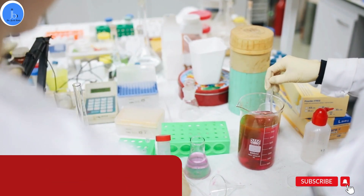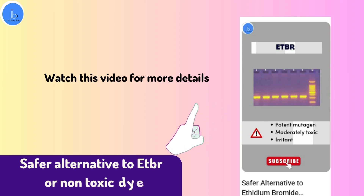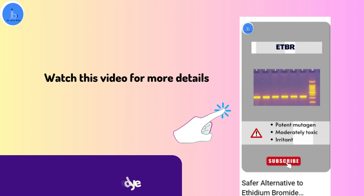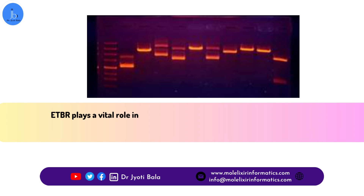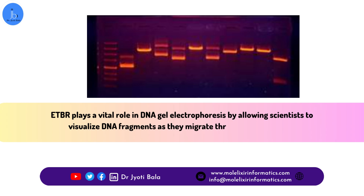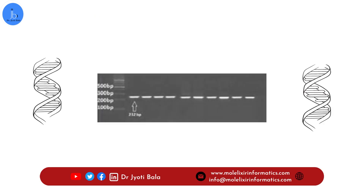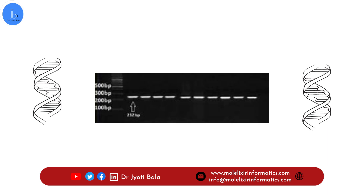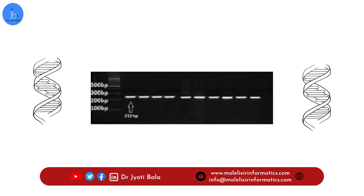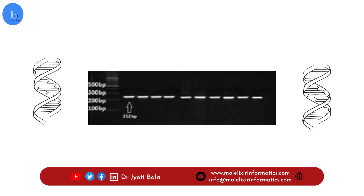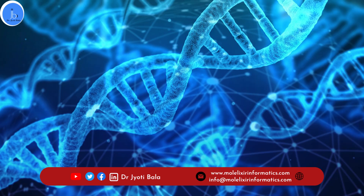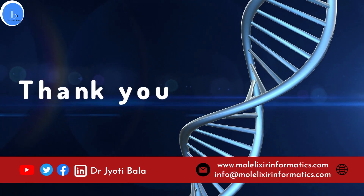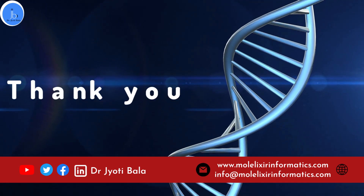In summary, EtBr plays a vital role in DNA electrophoresis by allowing scientists to visualize DNA fragments as they migrate through the gel matrix. Its fluorescence under UV light provides a clear and distinct image, aiding in the analysis and interpretation of DNA fragment size. That wraps up today's exploration of the role of EtBr in DNA electrophoresis. Stay curious, keep exploring, and see you next time. Thank you.